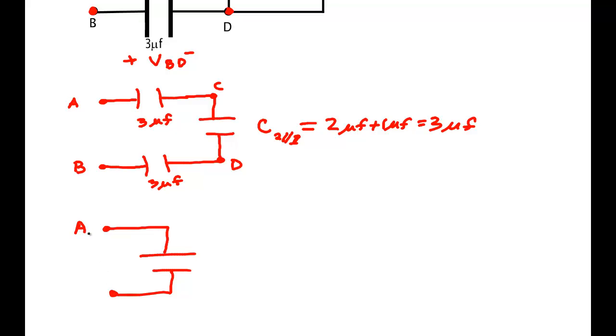So between A and B I have an equivalent capacitance equal to three microfarads divided by the factor of three of them. It's one microfarad. And that's the answer to the problem.